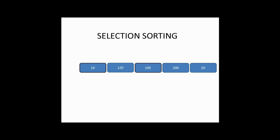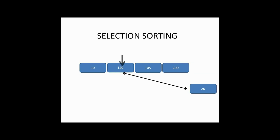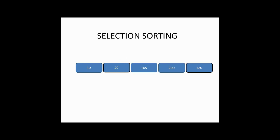Now again the concept is repeated. We locate the smallest element from the remaining list. We have the remaining elements 120, 105, and 224. So 20 is the smallest element. Now 20 and the second element of the list are swapped with each other, giving us the resultant list.